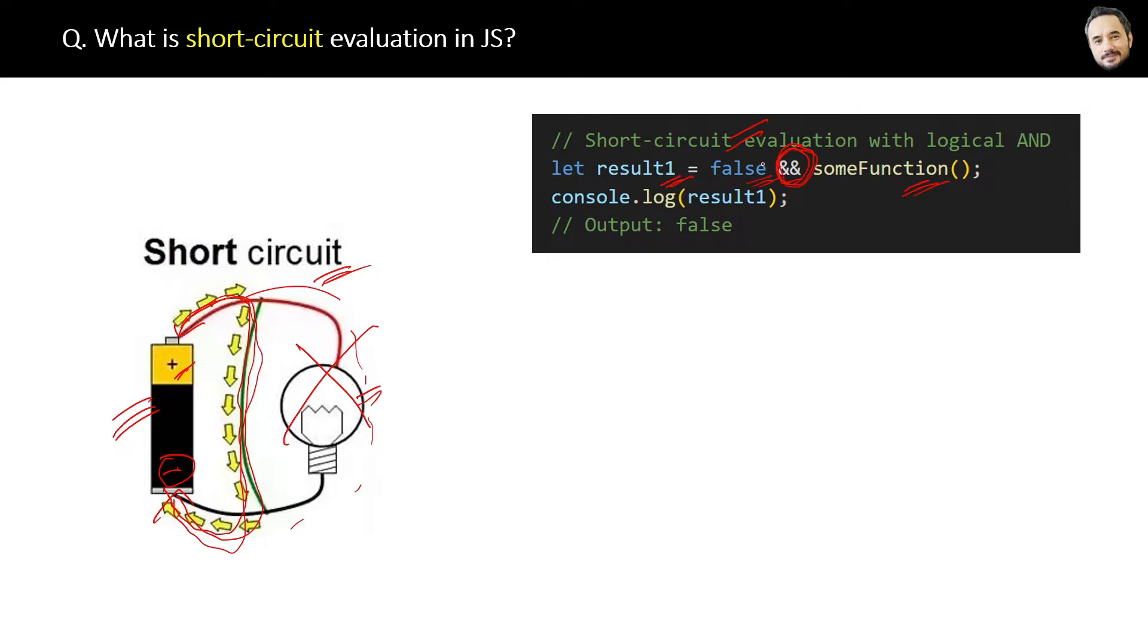So now AND has no need to evaluate the right side operand because we already got the answer from the left side. That's it, what we call a short circuit. When we get the result only by doing the half operation.